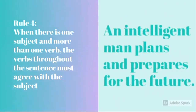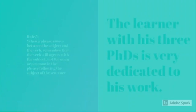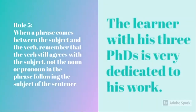Rule 4 is, when there is one subject and more than one verb, the verbs throughout the sentence must agree with the subject. An example is, an intelligent man plans and prepares for the future. Here, plans and prepares are verbs which agree with man.